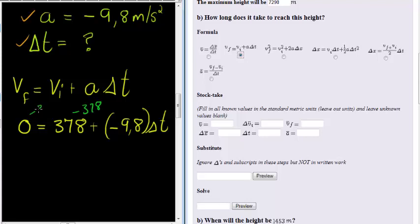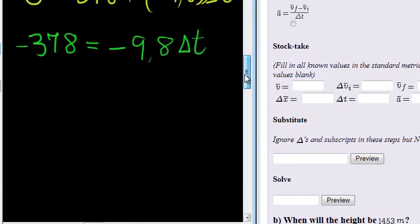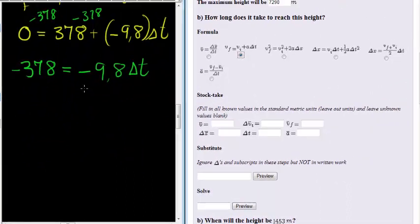So to solve this, I subtract 378 on both sides, so that I get -378 is equal to -9.8Δt. So to continue this, I simply divide both sides with -9.8, not Δt, just -9.8.